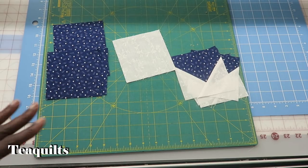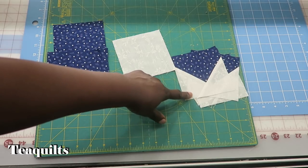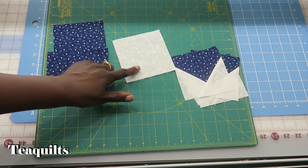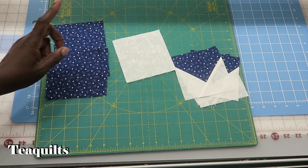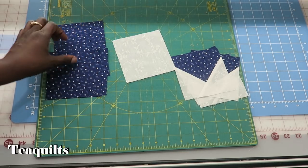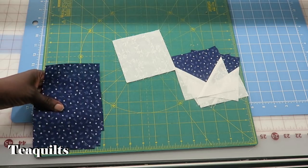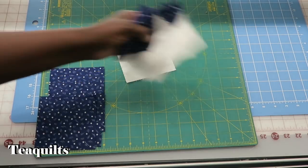I'm back with my four sewn star point units. These are actually going to be floating star points, and I have my one four and a half inch center square in the star fabric, and then I have the four additional squares that are cut four and a half inches in the background print fabric.